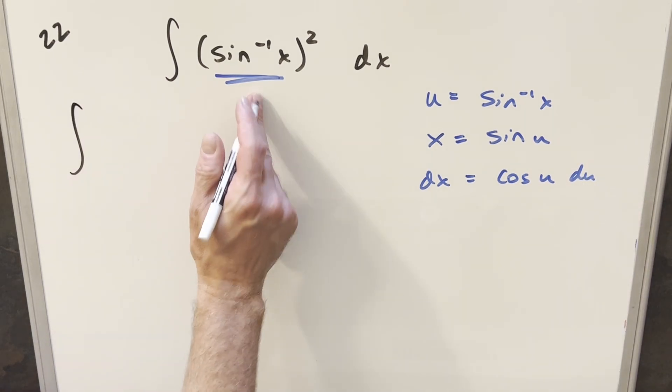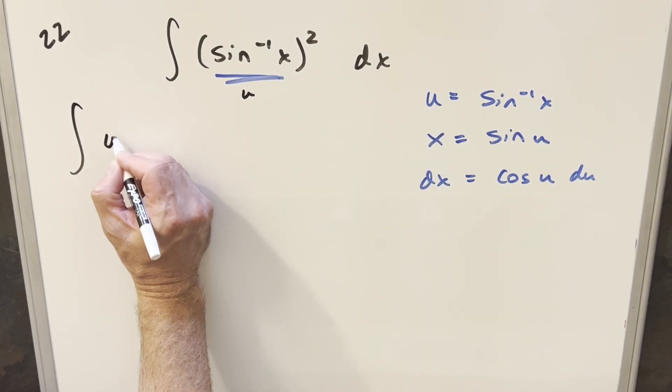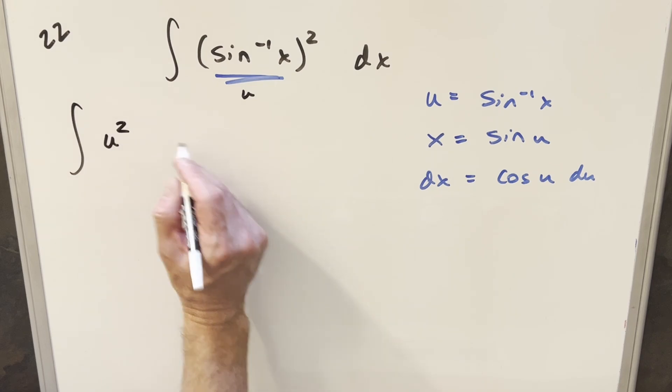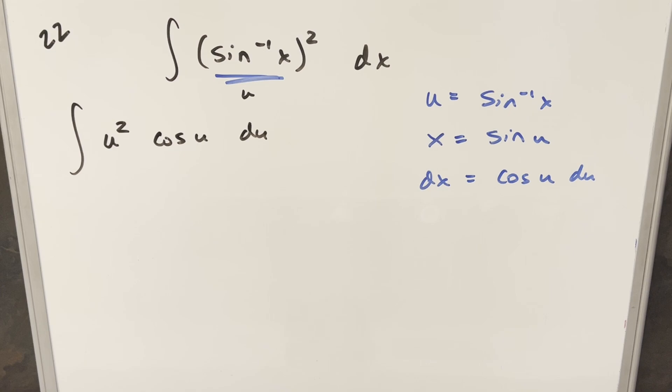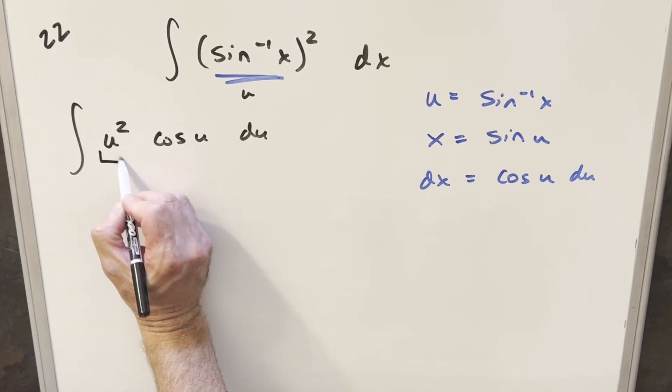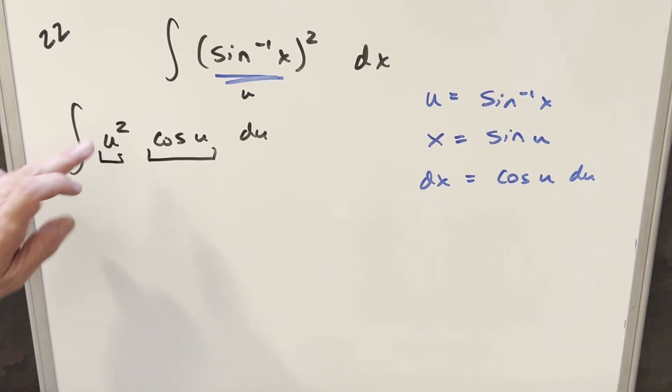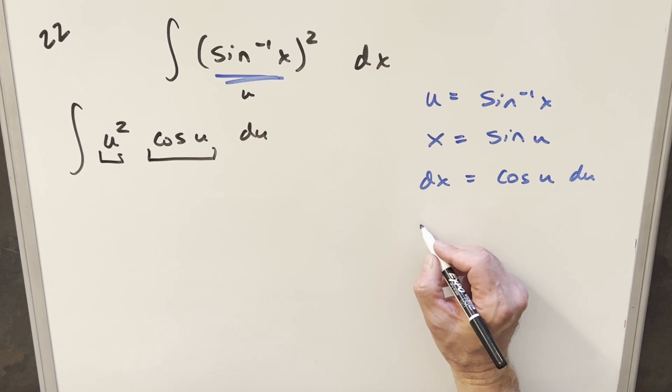So we'll go ahead and substitute this here. This is our u, so this is just going to become u squared. dx is going to be cosine of u du. But what we have here is perfectly set up for integration by parts. I'm going to differentiate u squared and integrate cosine of u using the DI method over here to the right.